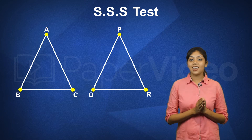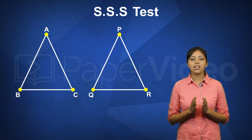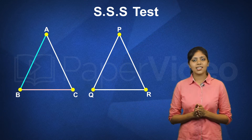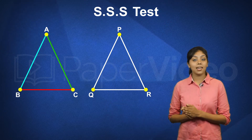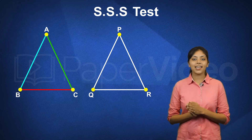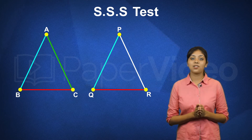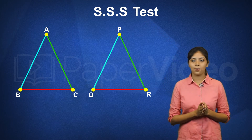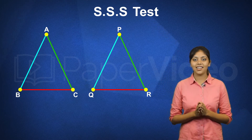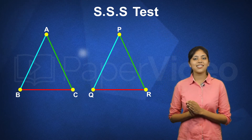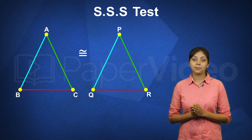According to the side side side test, if all three sides of triangle ABC are equal to the corresponding three sides of triangle PQR, then the triangles are congruent.